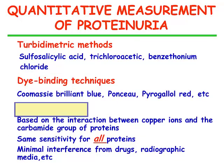What about quantitative measurement of proteinuria? We have turbidometric methods, dye-binding techniques, and biuret methods. The biuret methods are the best ones today because they are sensitive in the same way to all proteins and have minimal interference from drugs, radiographic media, et cetera.